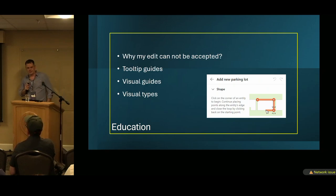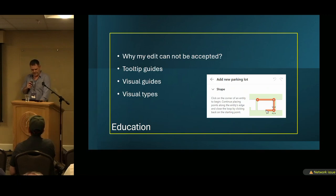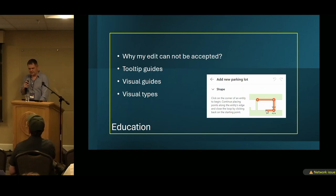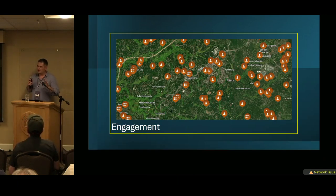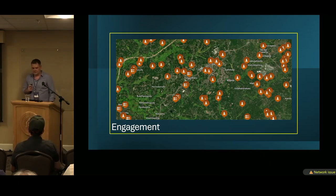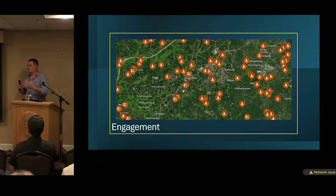Education is really important. Why can't my edits be accepted? We even started sending messages to users about this. We have really detailed tooltip guidelines, visual guides that explain in text and image what the user is supposed to do, and visual types. Usually the motivation for trying to map is really not clear — some users just want to add their own house or business, or change the name of a street. Some of them just really want to explore, so we are trying to engage them with some predefined tasks, similar to MapRoulette concept.